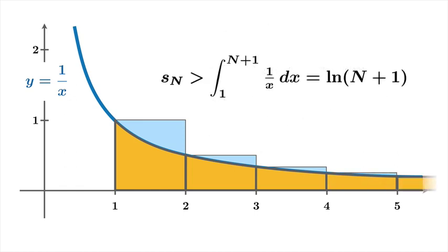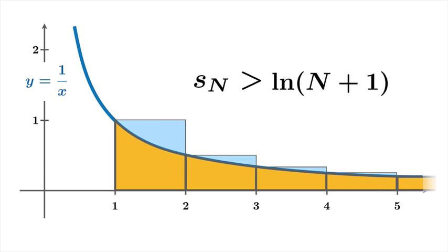And so what we conclude is that the nth partial sum has to be greater than this integral of the reciprocal function, which by the fundamental theorem of calculus is going to give us ln(n+1). So this is the key inequality. sₙ is greater than ln(n+1).